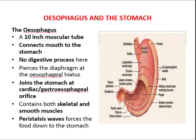The oesophagus is a muscular 10-inch tube that propels food from the laryngopharynx to the stomach. No digestive processes are initiated within the oesophagus. It is collapsed when not propelling food. It runs through the mediastinum and pierces the diaphragm at the oesophageal hiatus, joining the stomach at the cardiac orifice.